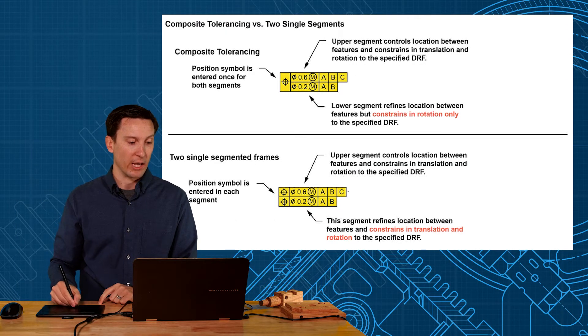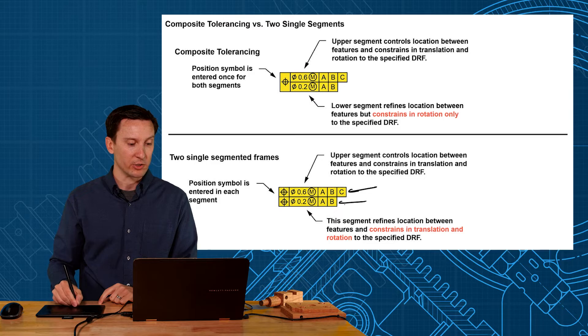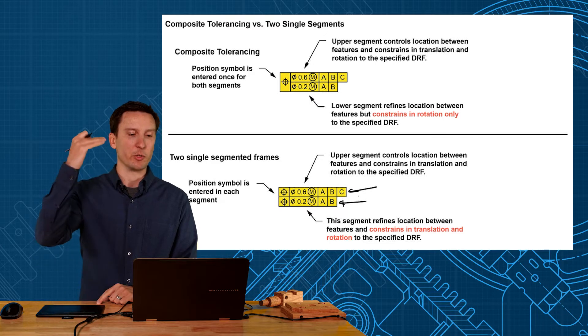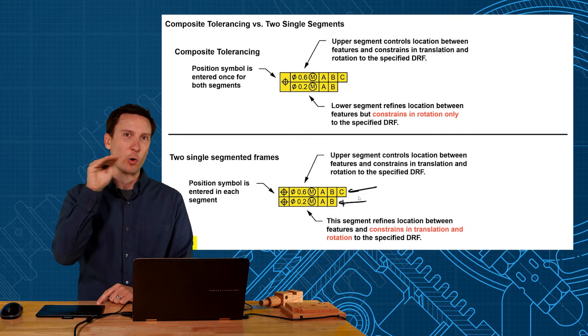Two single segments means location on the top to the datums and location on the bottom to the datums. But when you use composite, it's location to the datums and then rotation orientation only to the lower segment.